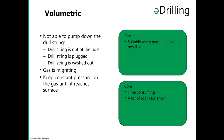Then there is the volumetric method — used when you are not able to pump down the drill string, such as when the string is out of the hole, plugged, or washed out. Here the gas needs to migrate, and we keep a constant pressure on the gas until it reaches the surface. The pro is that it's suitable when pumping is not possible. The downside is that it's quite time consuming and there is a lot of room for making mistakes.